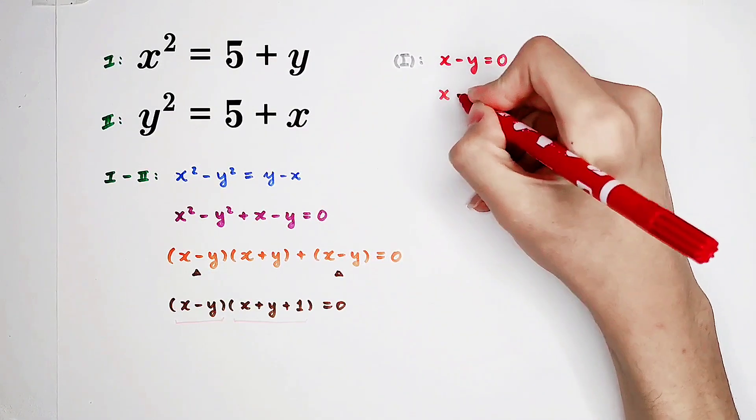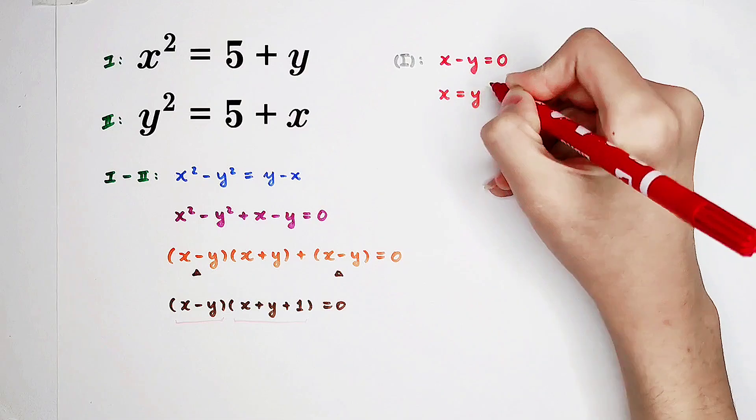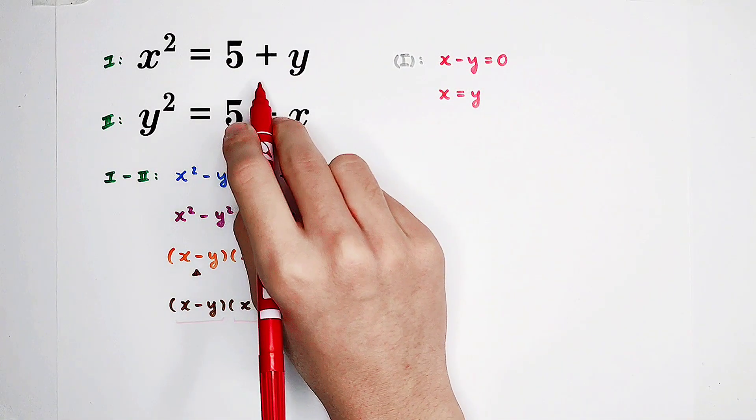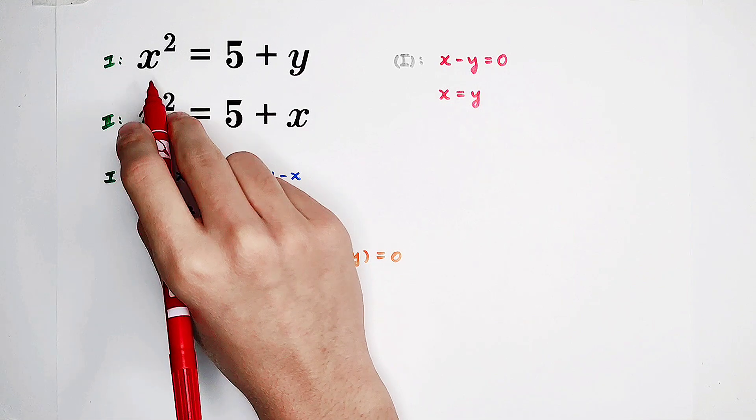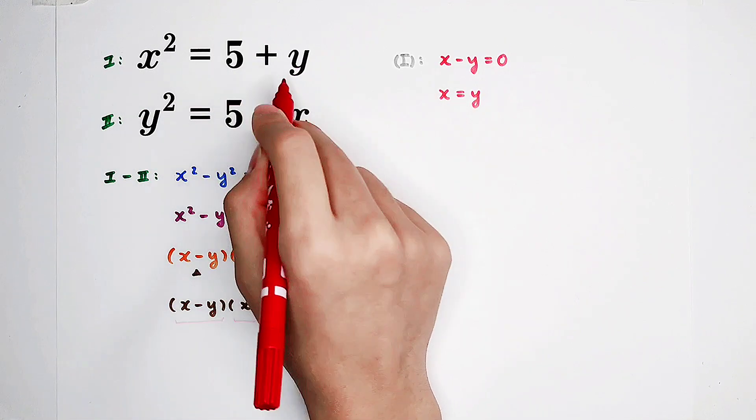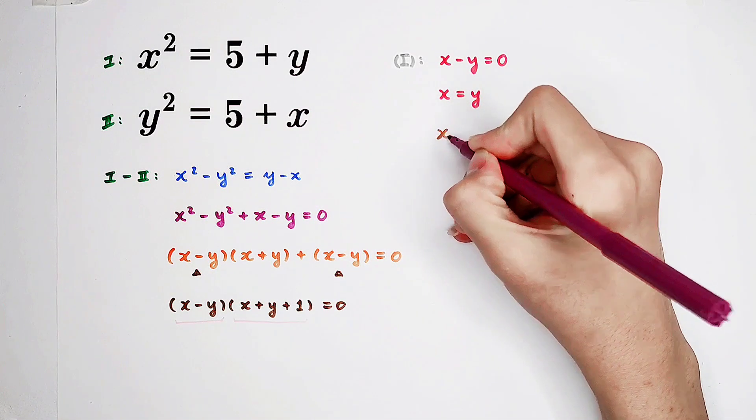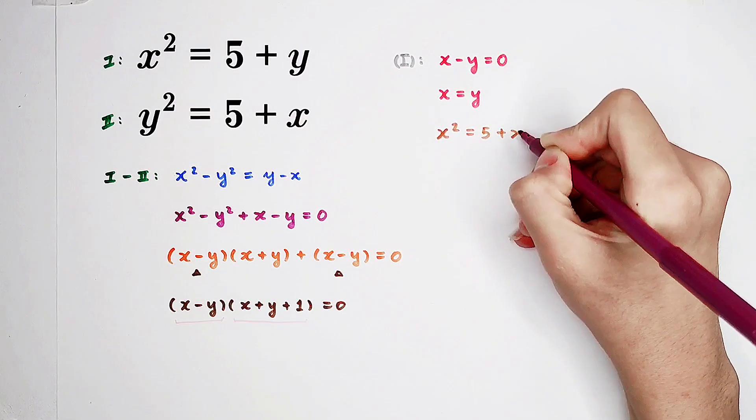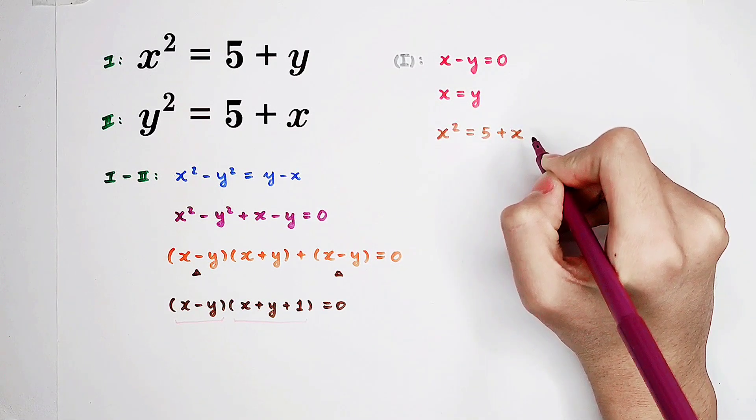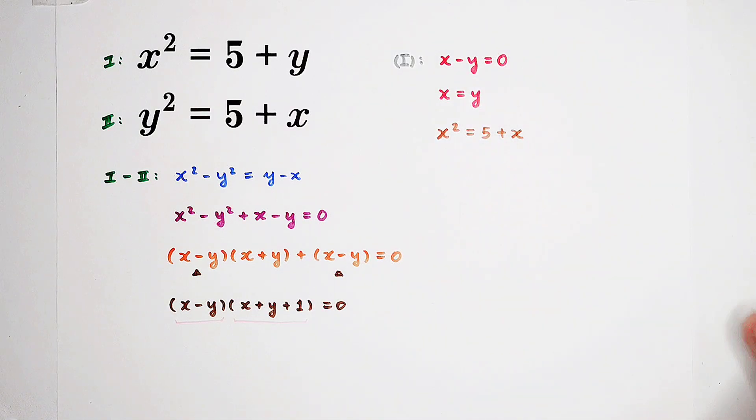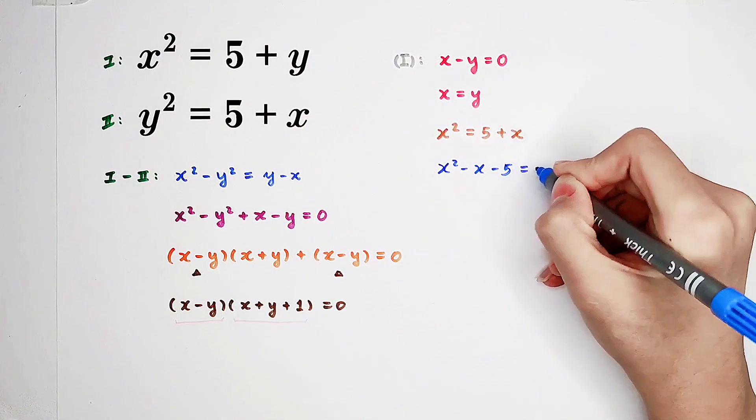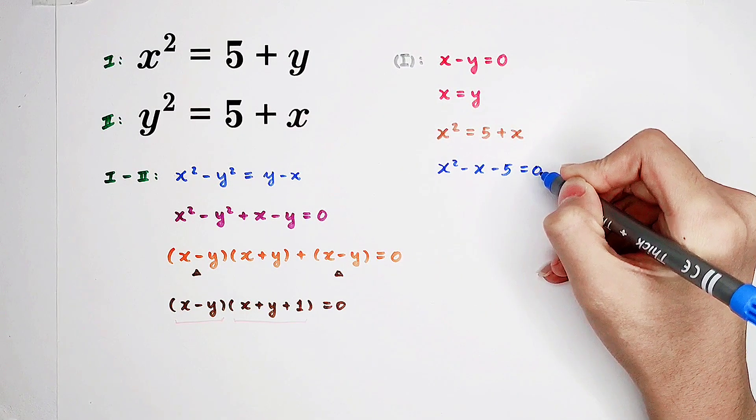Then, substitute the relationship to the first equation. Then we can get x squared equals 5 plus x. Now, it is only a quadratic equation about x, very easy and simple to solve. x squared minus x minus 5 equals 0. And, by using the quadratic formula.